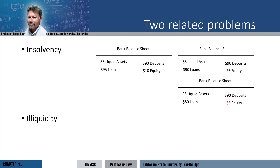It will have to tell the depositors that they can't pull out the money right then, and then it will have to raise money the best it can. Maybe it could sell the loans to another bank, although this isn't that practical, since it would take a lot of time and they wouldn't be able to get the full value of the loan. When everybody goes to a bank to pull out their deposits, we call this a run on the bank, or a bank run.